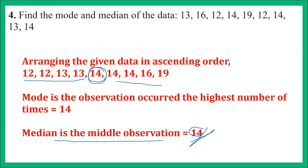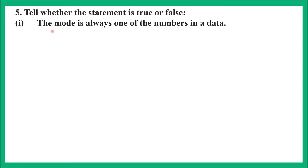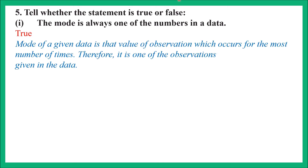Let us move to the next question. Question number 5: Tell whether the statement is true or false. Part 1: 'The mode is always one of the numbers in the data.' Yes, this is true. We find mode by taking the most frequent observation from the data, so it is always one of the observations in the data. Mode of a given data is that value of observation which occurs the most number of times, therefore it is one of the observations given in the data.